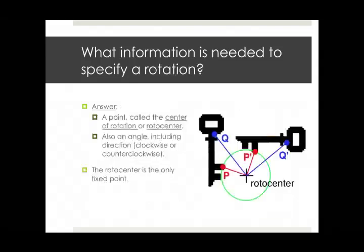All right, same question for rotation. What information is needed to specify a rotation? The answer now is actually two pieces of information. The first thing you need to say is where is the center of rotation? That's a point. As I've said, it's called the center of rotation or it sometimes can be called rotocenter. I find that a sort of ugly word and don't use it a lot, but this is the word that you'll find in the book.